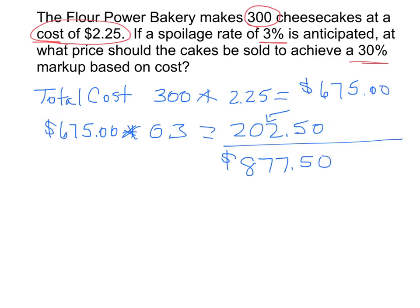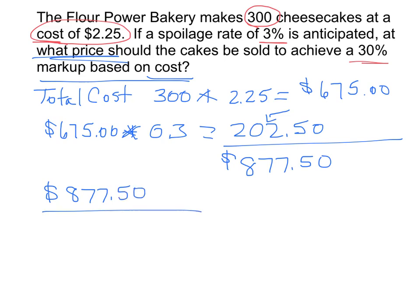Now what we want to do to find the actual price — what price here — is we're going to take this value, the $877.50, because that's our cost with our markup, and we're going to divide it by the number of units we would get.